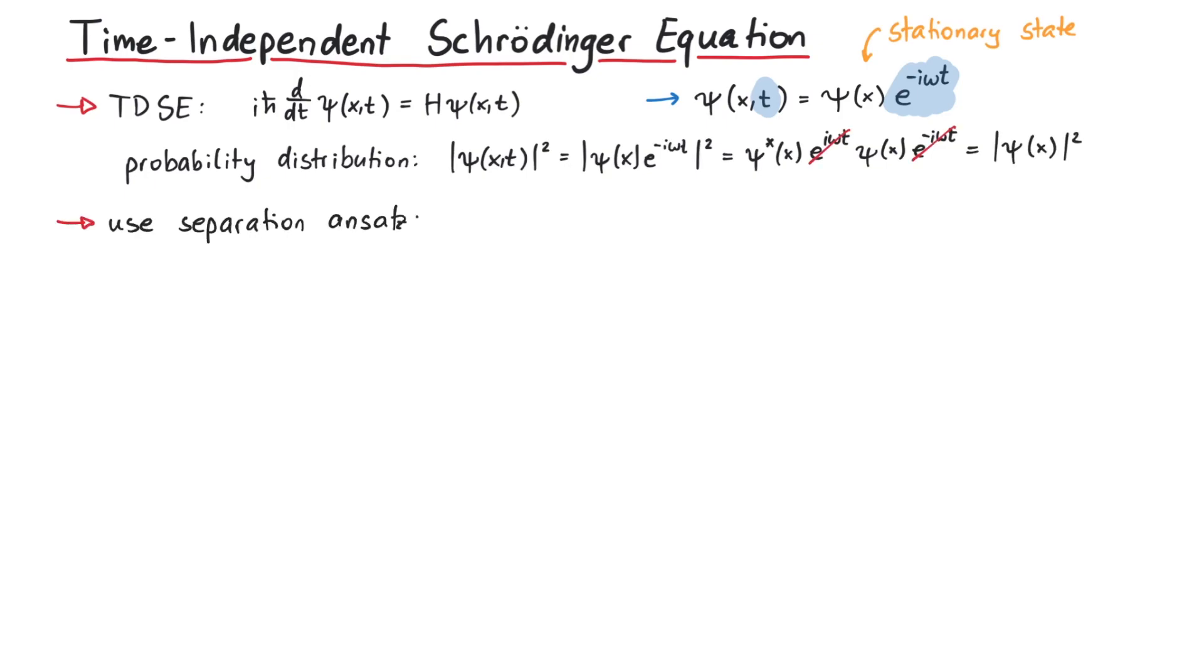If we use this separation ansatz in the time-dependent Schrödinger equation, we can easily perform the time derivative and then cancel the exponential from both sides of the equation, since it is just a complex number, and no operator is acting on it anymore.